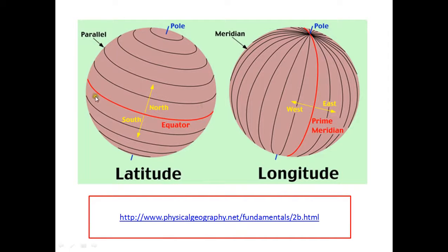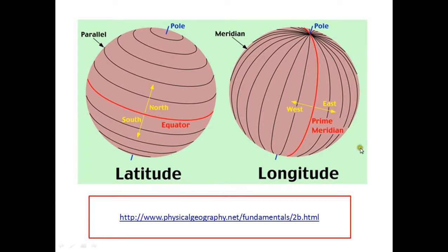Here is an image of the Earth. This is the equator at zero degrees. Lines going from the equator towards the poles are latitudes — both north and south. These are all parallel lines. The prime meridian passes through Greenwich, England. Going west gives west longitude and going east gives east longitude.